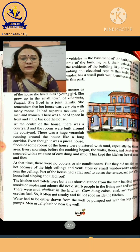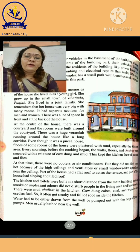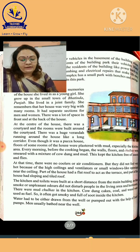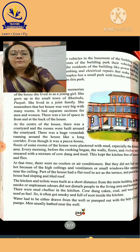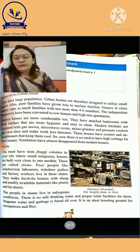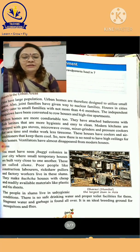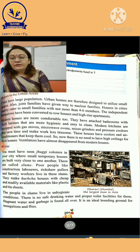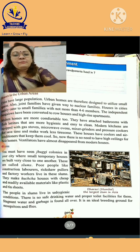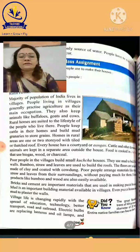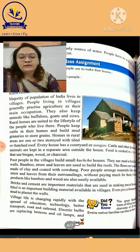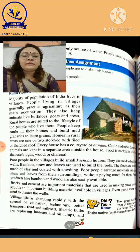In urban areas, there are different kinds of houses. As well as in rural areas, there are different kinds of houses. In some places, we also get a slum which is called a shuggy, where people live in a very unhygienic condition. In rural areas, there are small houses, and there are very little items that are used to make a house.